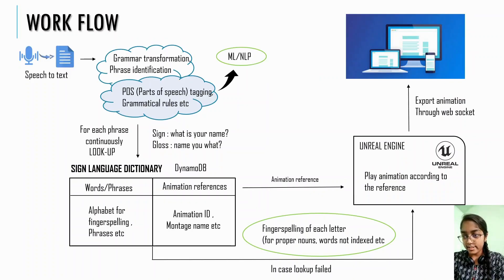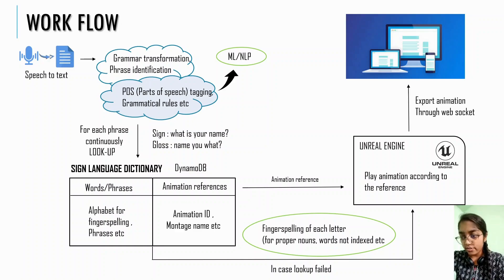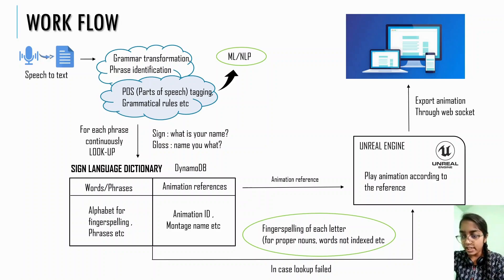The estimated flow of work is this. We first convert speech to text using Amazon Transcribe. That sentence is then transformed and phrases are identified. This will be implemented using NLP or by training an ML model. The output would be a gloss sentence with stop words removed. A DynamoDB table is created which stores the phrases and alphabet. The corresponding animation ID along with the montage name is stored in the next column. When the gloss is generated, the animation sequence reference for those words is extracted from Unreal Engine. If there is no such word — for example, a noun like Mississippi — finger-spelling of each letter is done.